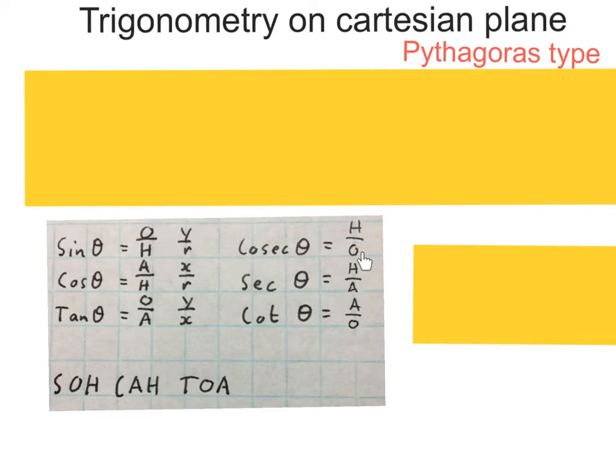Sine is O over H, so it's H over O. Cos is A over H, so sec is H over A. Tan is O over A, so cot will be A over O.